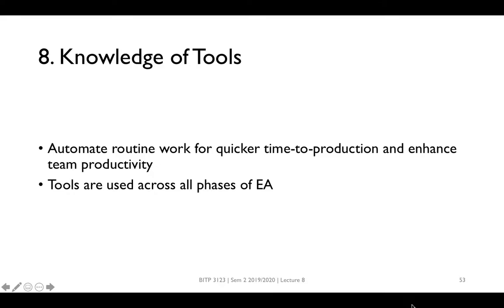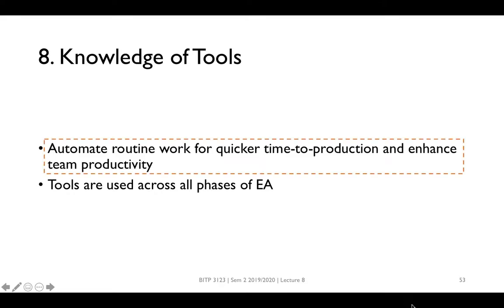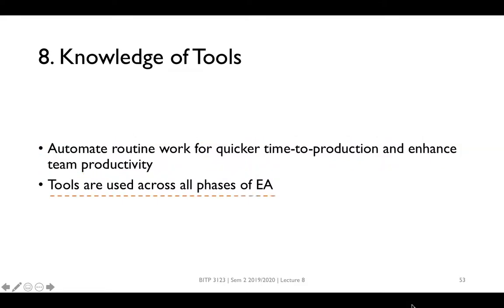Various tools are used in EA development to ensure EA can be deployed on time. These tools automate routine works such as document formatting, testing, and code analysis to enhance team productivity. Tools are used across all phases of EA development. For example, in the requirements and analysis phase, requirement gathering and analysis tools are required. In design, tools for architecting and modeling are required to produce software models and components. In programming, a comprehensive IDE is needed to automate software building, unit testing, and configuration management activity.